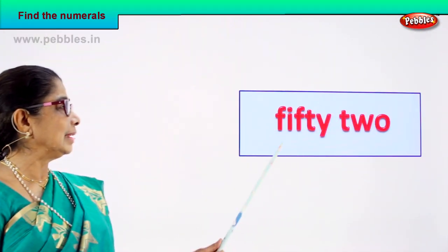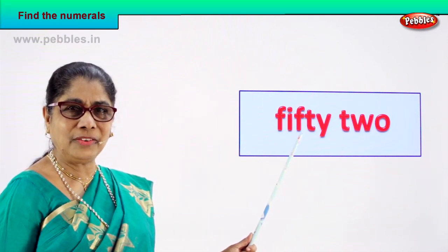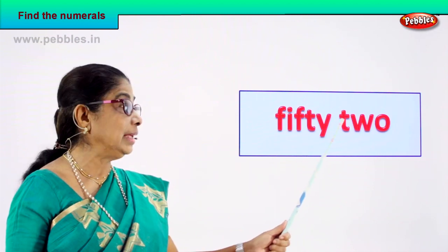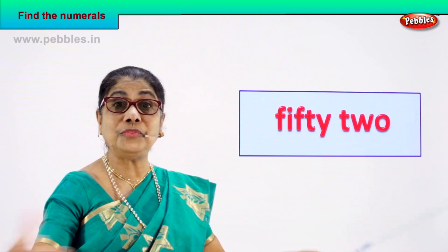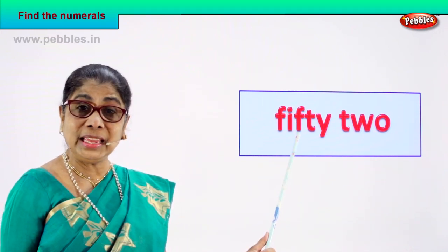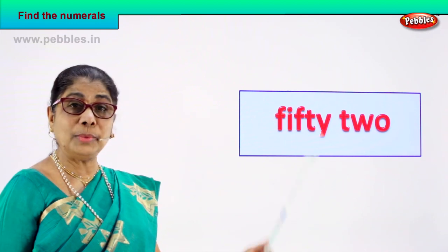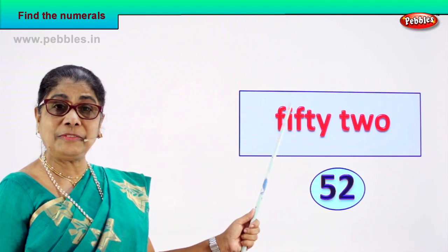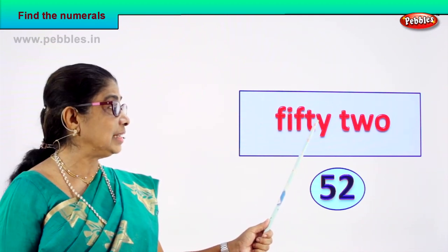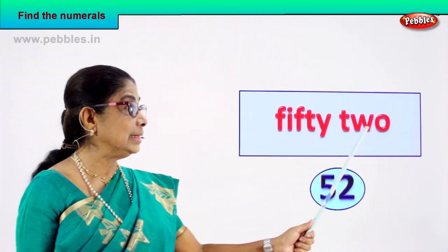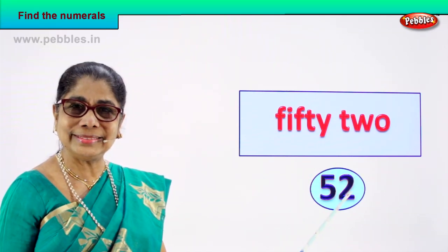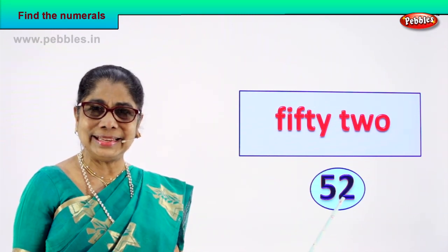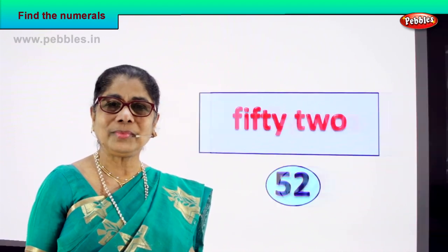Look at our first exercise. Read for me — spell and read: F-I-F-T-Y, 50, T-W-O, 2. Very good! So what is the numeral? 50 and 2, so the numeral is 52. Spell it: F-I-F-T-Y, 50, T-W-O, 2. You should be able to say 52. It's a nice exercise, isn't it?